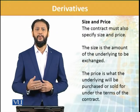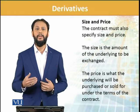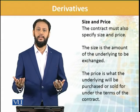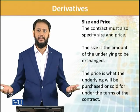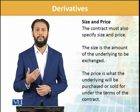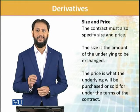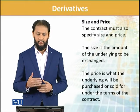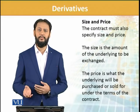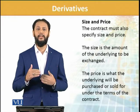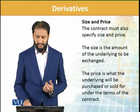Other important key terms are size and price. How much are we talking about? For example, if we are talking about currency, are we talking about 1,000 dollars, 10,000 dollars, or 1 million dollars? The size must be specifically mentioned. The contract must also specify size and price — these will be stated in the contract and give us clarity. Size is the amount of the underlying to be exchanged. Price is what the transaction or deal will happen at. Both elements are important.